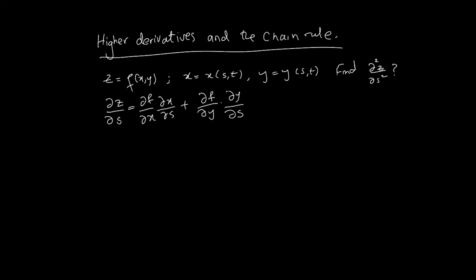To start with, we need to find ∂z/∂s, which we've done before. Then to find the second derivative we apply the ∂/∂s operator to ∂z/∂s, which gives us ∂²z/∂s².